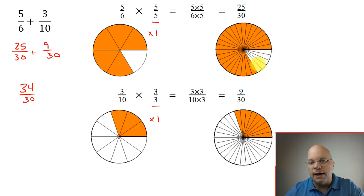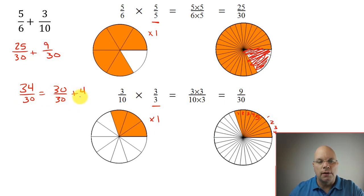We're missing 5 thirtieths here. So I could take 1, 2, 3, 4, 5 of these would fill in this hole. And we'd have 1, 2, 3, 4 left over. So we have 30 thirtieths and 4 thirtieths. That's 1, 30 thirtieths is 1 and 4 thirtieths.